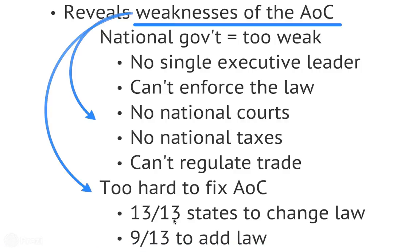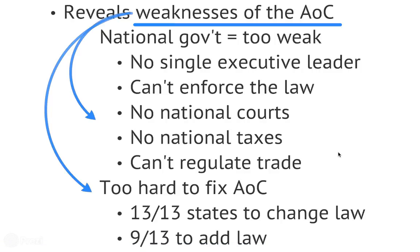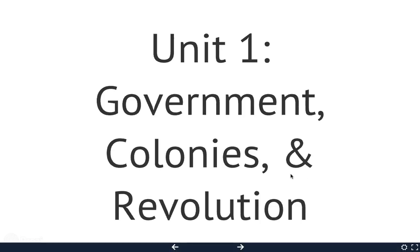It was also way too hard to fix the Articles of Confederation. In order to change them, all 13 states had to agree, which was impossible given how different they were from each other — the northern and southern colonies were so different. They were never able to change any of these problems. You did need nine of 13 to add a law, and they did that once with the Northwest Ordinance, but even that was very hard to achieve.